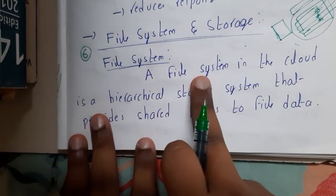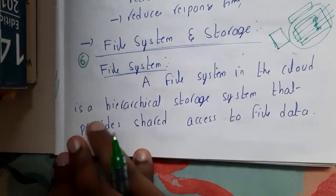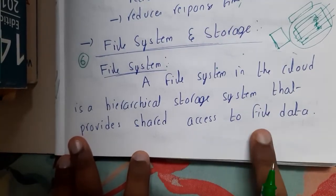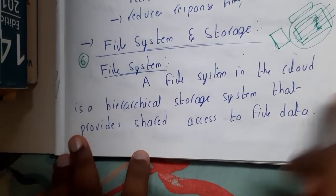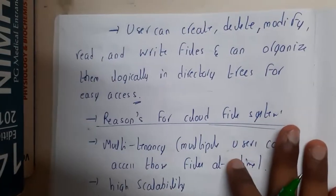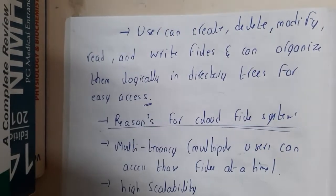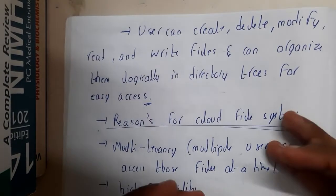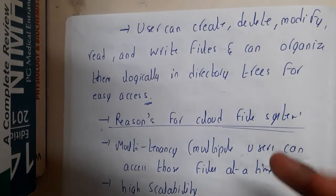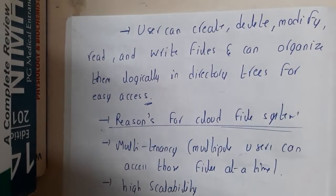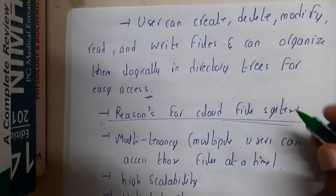A file system in the cloud is a hierarchical storage system that provides shared file access to the file data. The different operations which we can perform include creating data, deleting data, modifying data, reading data, and writing data — any kind of operation you can perform on normal data can also be performed in this file system.